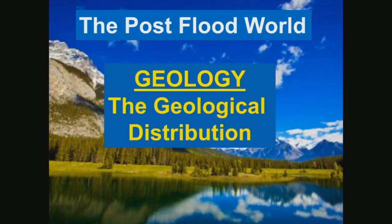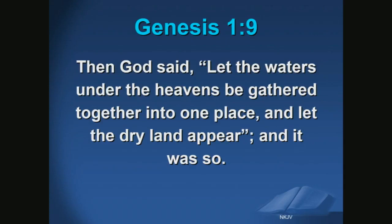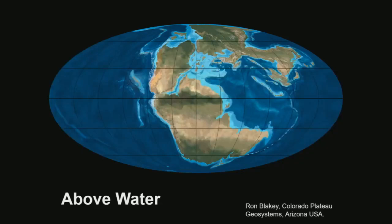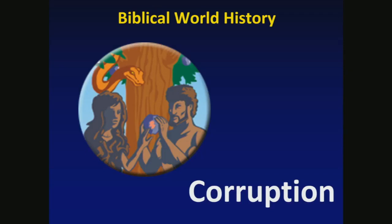This morning we're going to deal with the post-flood world, starting with geology — the geological distribution I find in the world that I live in. In the seven C's, it starts with Creation. God said in Genesis 1:9, 'Let the waters under the heavens be gathered together into one place, and let the dry land appear, and it was so.' In the beginning we don't know exactly what it looked like, but there was land and there was water. On those six literal days, all the biology, outer space, and the whole known universe were created.